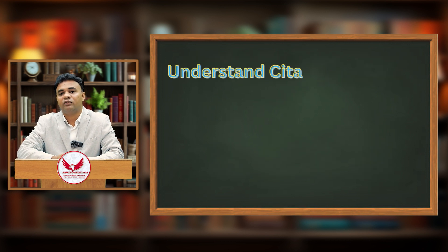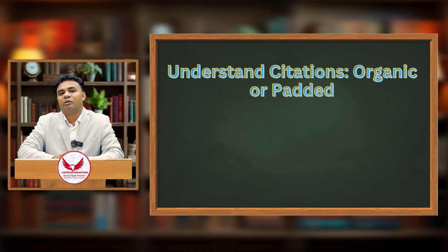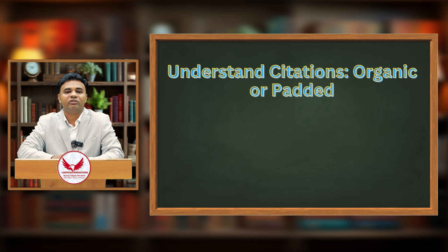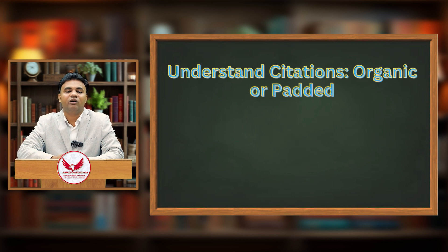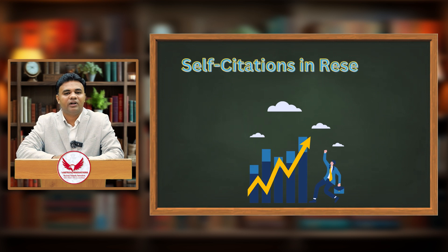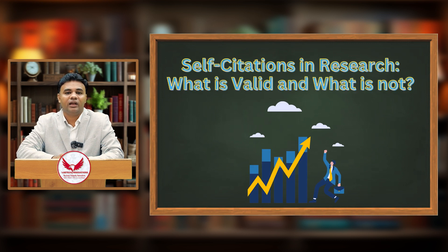As a researcher, there are few things you need to understand about citations. Many researchers think they can just add their own citations to different articles, which gets reflected in Google Scholar, Scopus profiles, and other profiles. But these are self-citations and may not work well. If more than 50% of citations in your profile are self-citations, it has a negative effect. It is better to improvise your profile and get more exposure to your research to organically increase your citations.